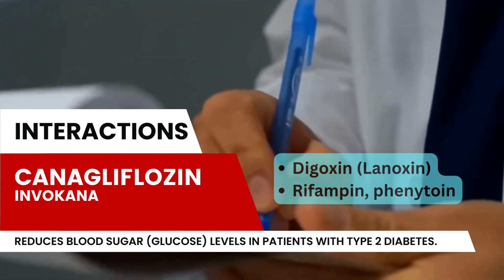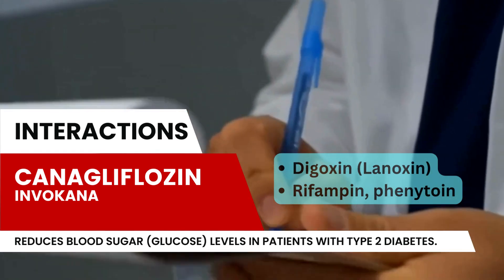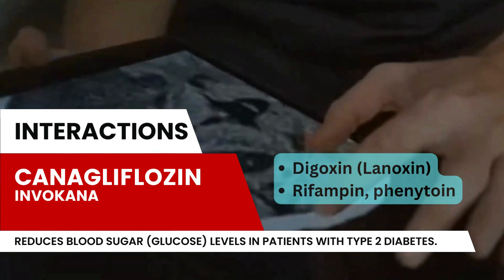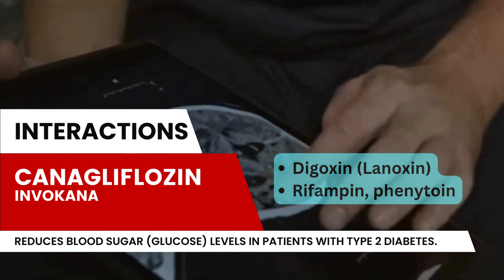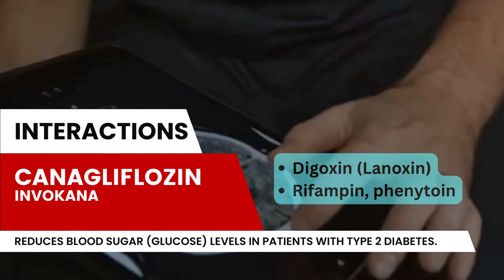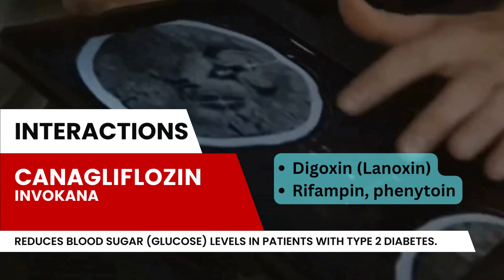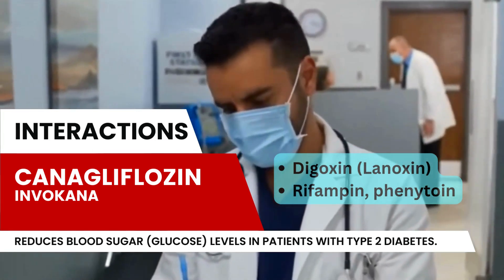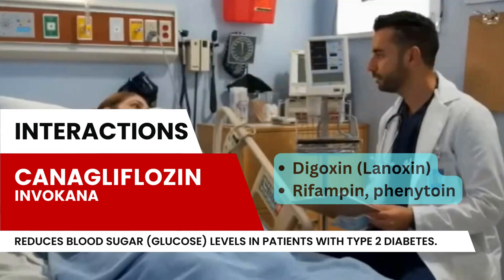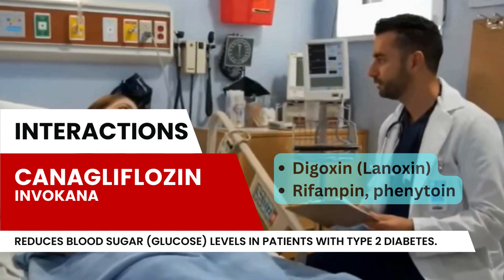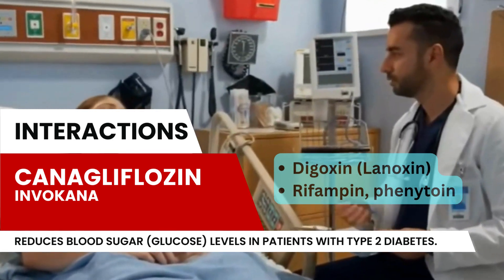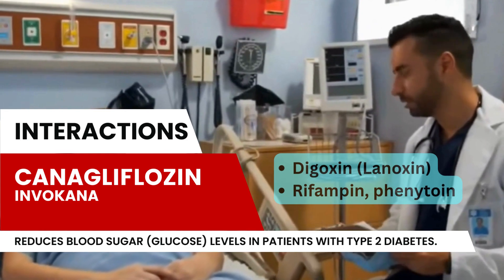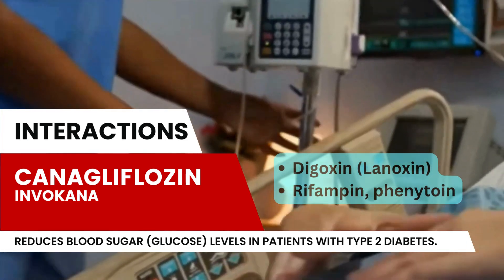The dose of canagliflozin should be increased to 300 mg daily when combined with rifampin, phenytoin, phenobarbital, or ritonavir. Monitoring glucose control with urine glucose tests is not recommended in patients taking canagliflozin and similar drugs, as these drugs increase urinary glucose excretion and will lead to positive urine glucose tests. Use alternative methods to monitor glucose control.